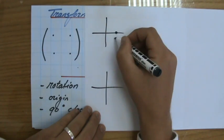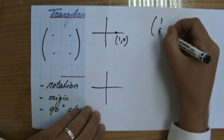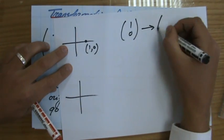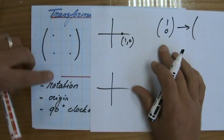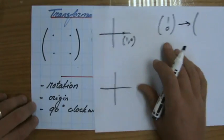So as a column vector (1,0), what does (1,0) become after a rotation with the center being the origin 90 degrees clockwise?